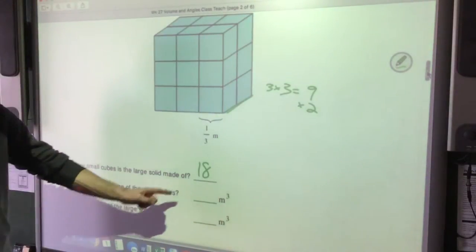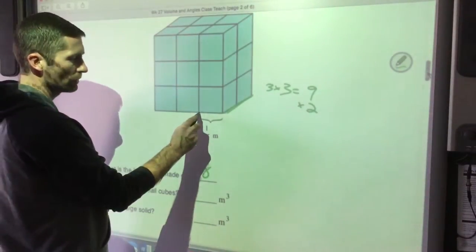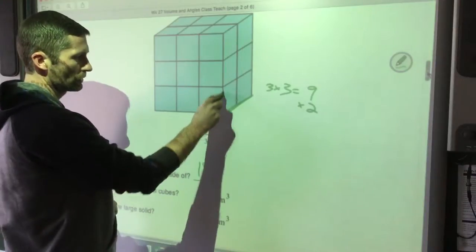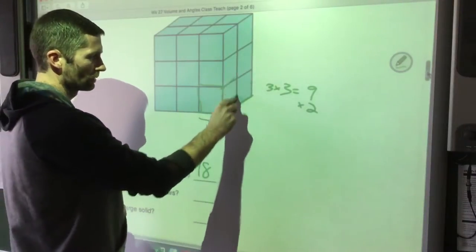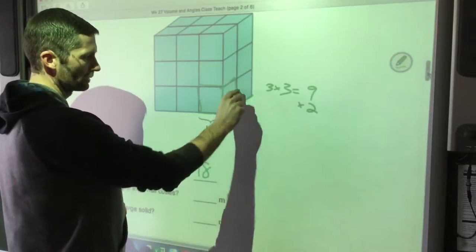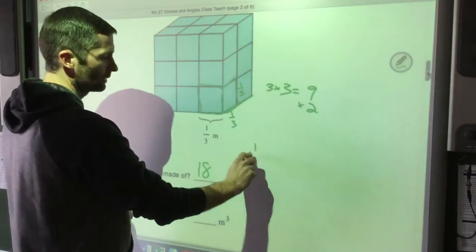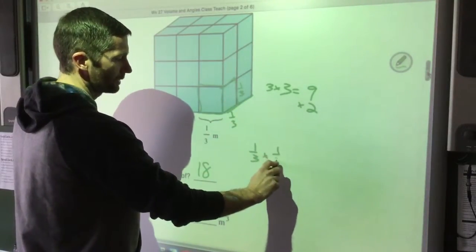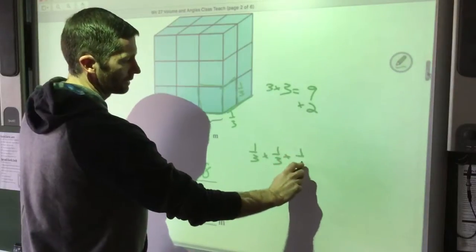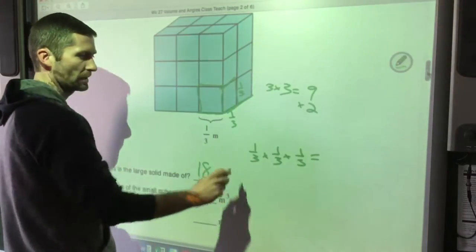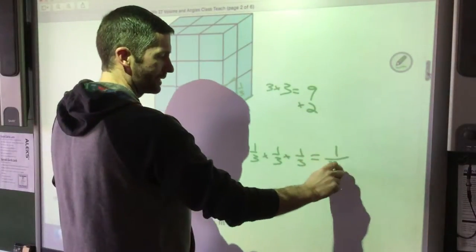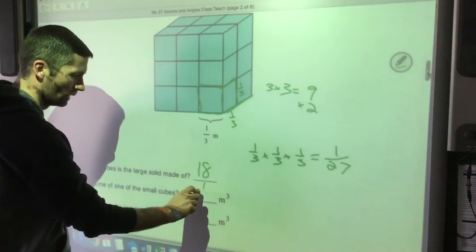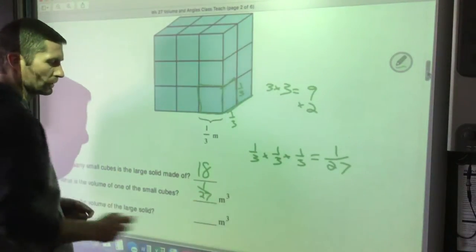What's the volume of one of the small cubes? Okay, so one small cube, we're just looking at one of these cubes. It's one-third by one-third by one-third. So I got to do one-third times one-third times one-third, length times width times height. So that's one over 27. It's not one-third, it's 1/27th of a cubic meter.